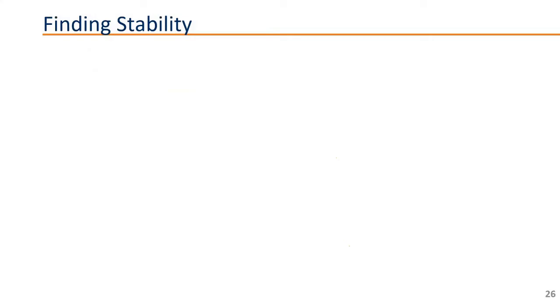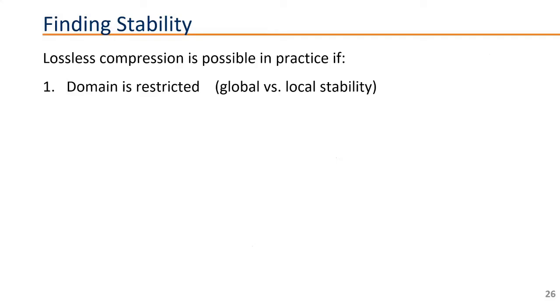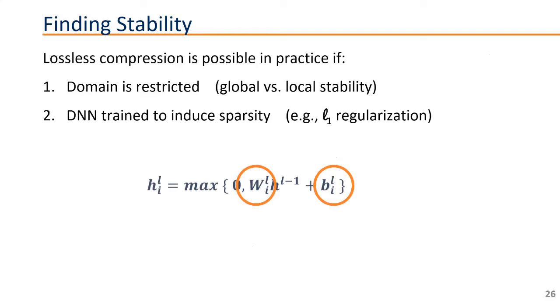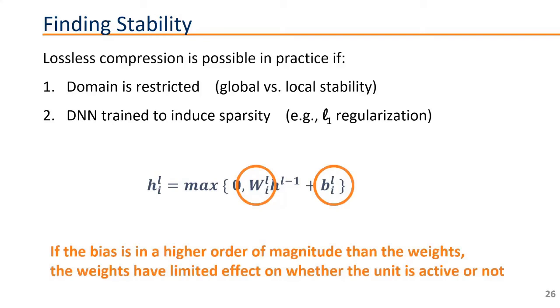And there are some ways in which we can push the units to be more stable. The first one is when we have restricted domains. So if we're talking about a smaller domain, for example, only values between zero and one instead of any possible value, that's a local stability. But that might be all that we need. Of course, the smaller the domain is, the easier it is to identify stable units. And we can also induce sparsity in the neural network by training it with regularization. Let's say, for example, that we use regularization on the weights. If the values for the bias are much larger than the values for the weights because we have regularization of the weights, then a negative bias is likely to make a unit being stably inactive and a positive bias is likely to make a unit being stably active.